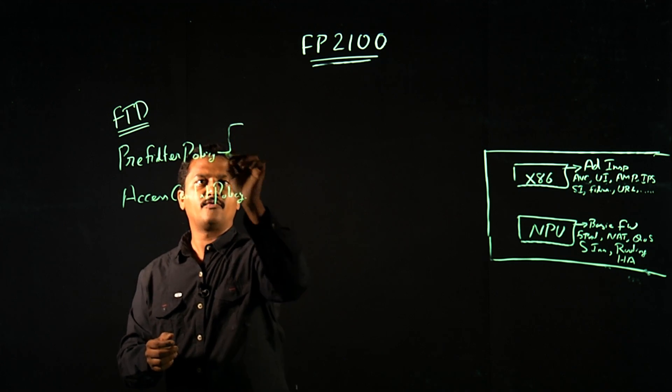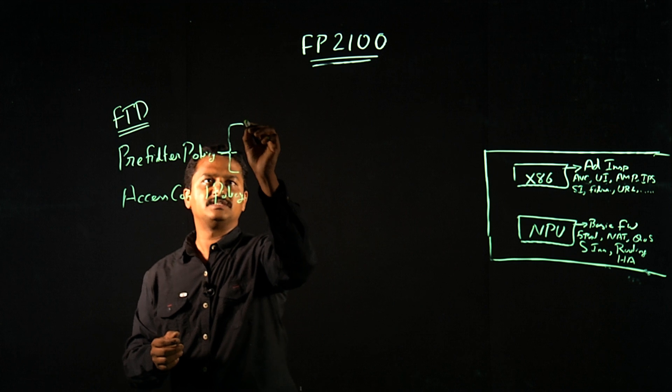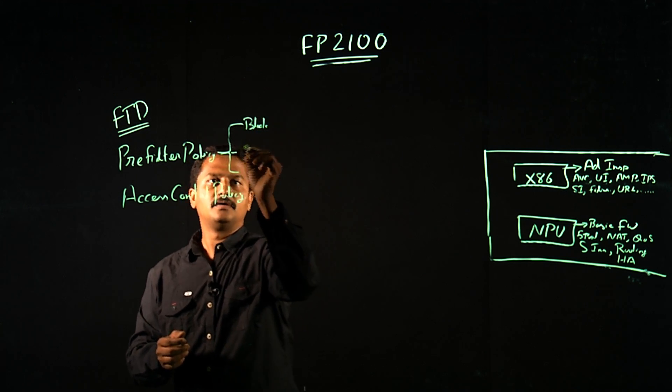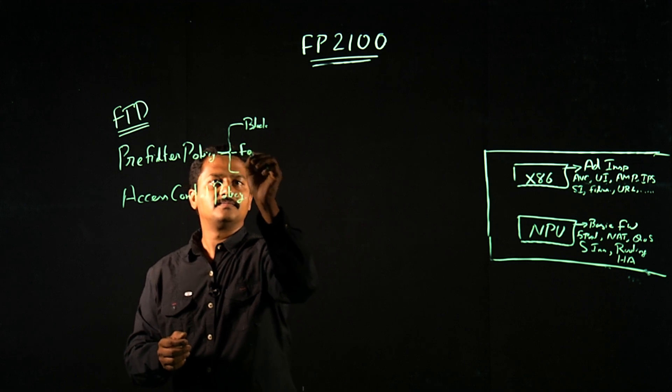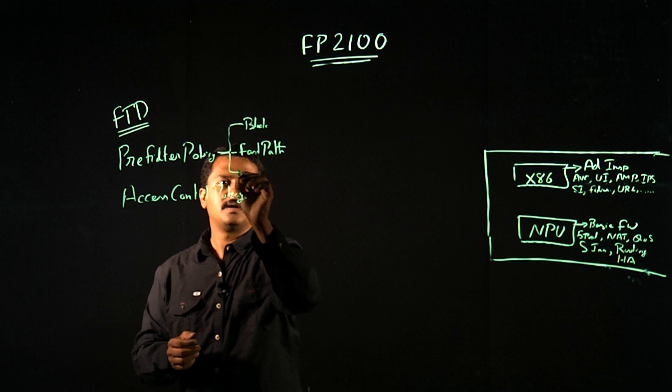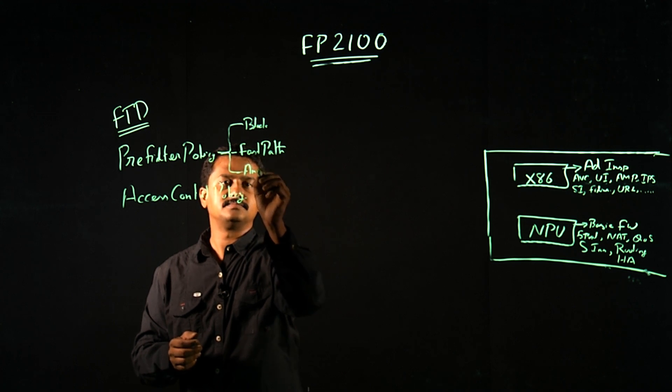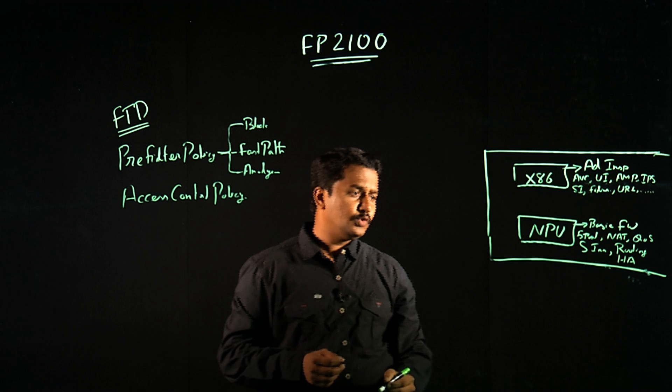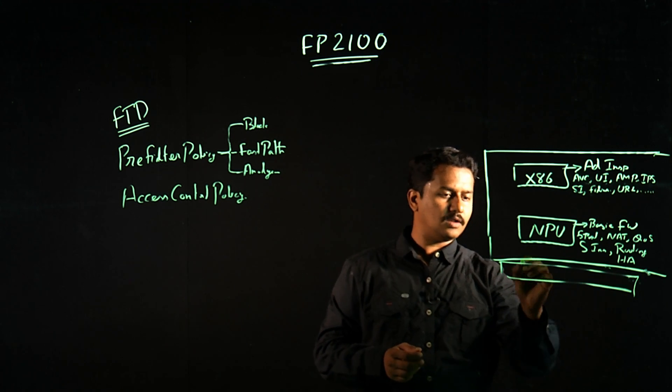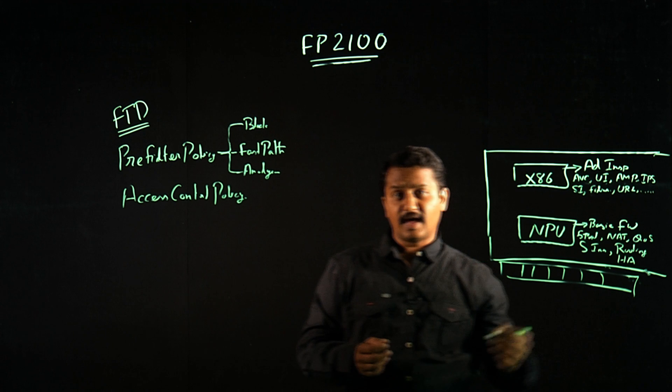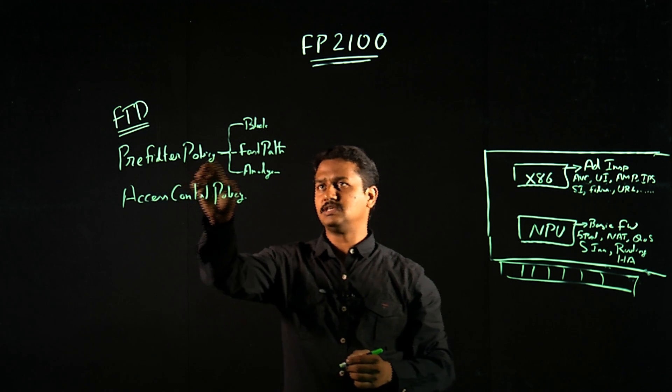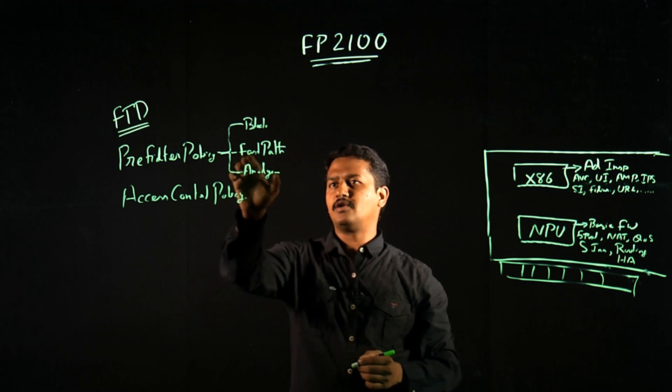In pre-filter policy, we have primarily three different actions. One is block, fast path, and analyze. When you have a traffic that you want to allow or deny based on 5 tuple, you could use pre-filter policy with action block or fast path.